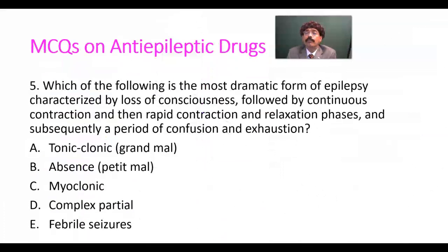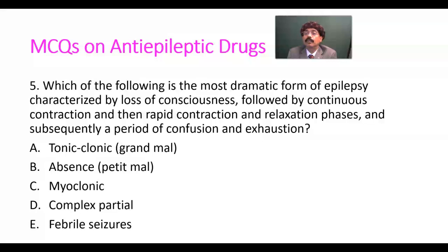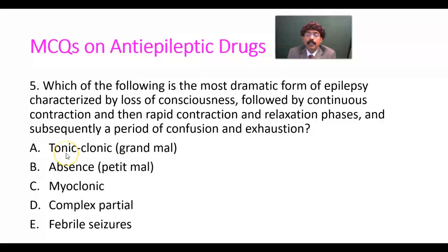Question number five: which of the following is the most dramatic form of epilepsy, characterized by loss of consciousness followed by continuous contraction and then repeated contraction and relaxation phases, and subsequently a period of confusion and exhaustion? A: tonic-clonic or grand mal. B: absence or petit mal. C: myoclonic. D: complex partial. E: febrile seizure. The answer is A — tonic-clonic or grand mal seizure.